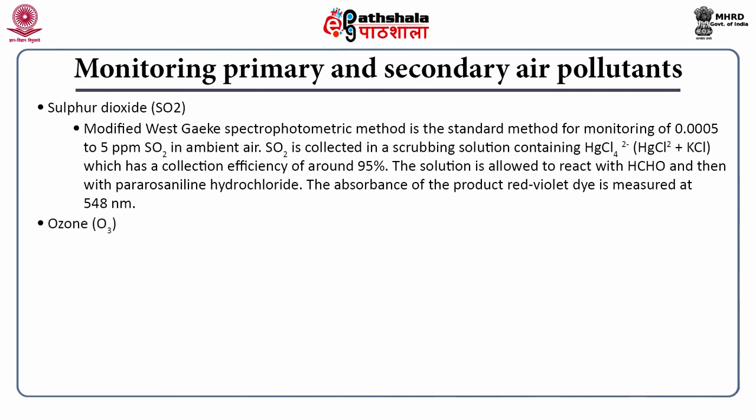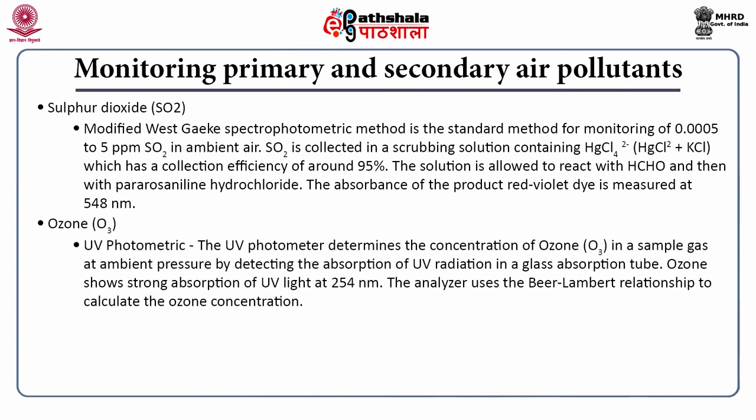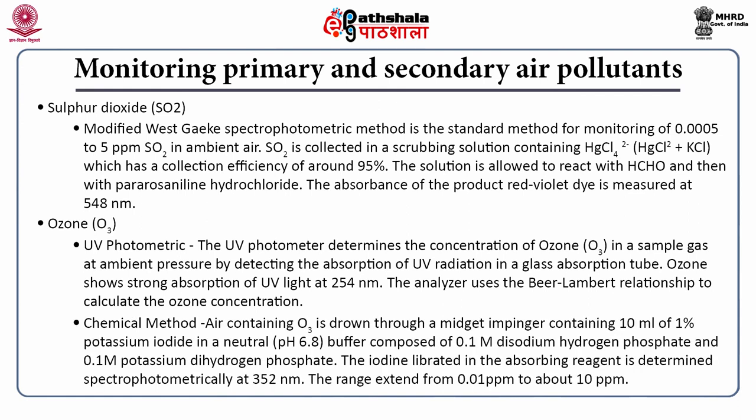Ozone measurement is mainly by the UV photometer method. The UV photometer determines ozone concentration in a sample gas at ambient pressure by detecting absorption of UV radiation in a glass absorption tube; ozone shows strong absorption of UV light at 254 nm. The analyzer uses the Beer-Lambert relationship to calculate ozone concentration. Ozone can also be measured by a chemical method where air is drawn through a midget impinger containing 10 ml of 1% sodium iodide in neutral buffer (0.1 M disodium hydrogen phosphate and 0.1 M potassium dihydrogen phosphate); iodine liberated is determined spectrophotometrically at 352 nm, with a range of 0.01 to 10 ppm.